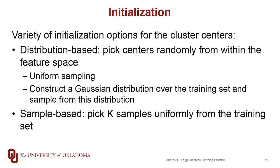The sampling-based approach — and this is the approach I tend to take when implementing this algorithm — is that we go into our training set and uniformly sample k samples, then assign those as our cluster centers. This way we have a reasonable notion that these centers are actually coming from a reasonable representation of the distribution of the samples within our feature space.